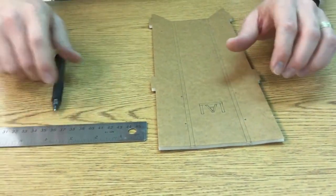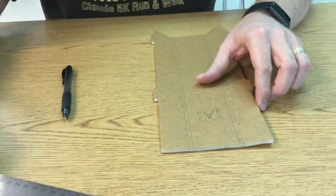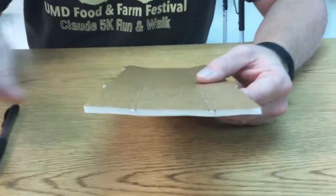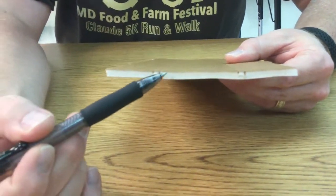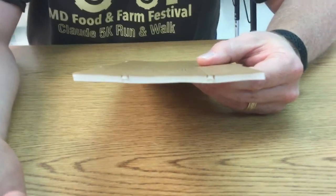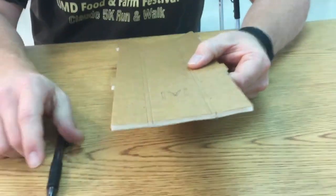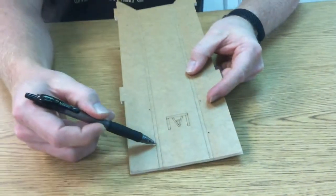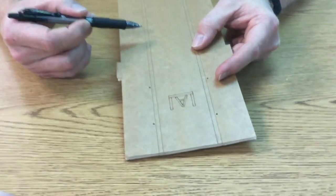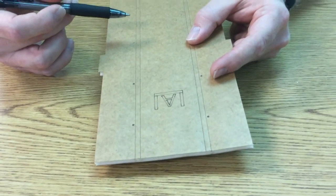You also need to take into account the thickness of the foam board when you are folding it. This foam board is 3/16ths of an inch thick, and so in order to fold a piece of foam board you need to remove a chunk of the foam 3/16ths of an inch wide in order to be able to fold it.